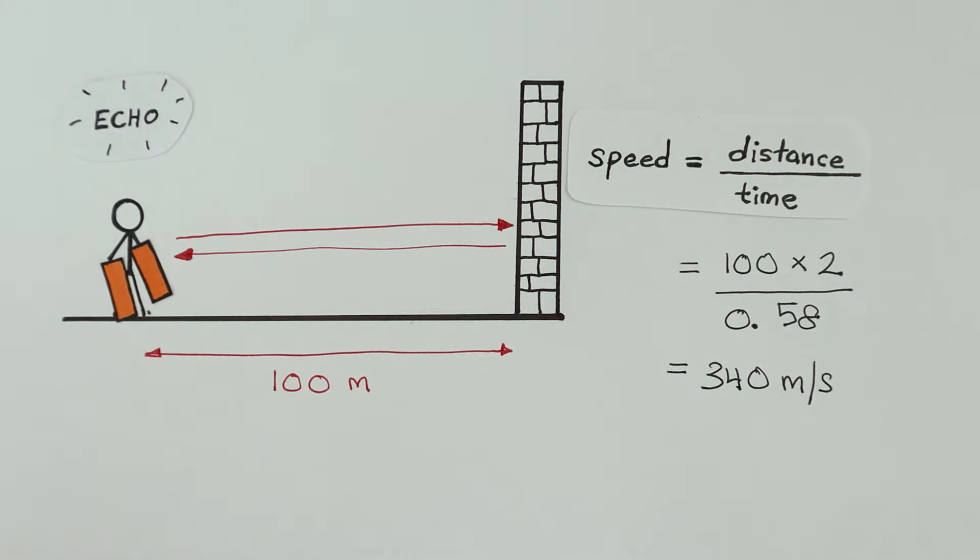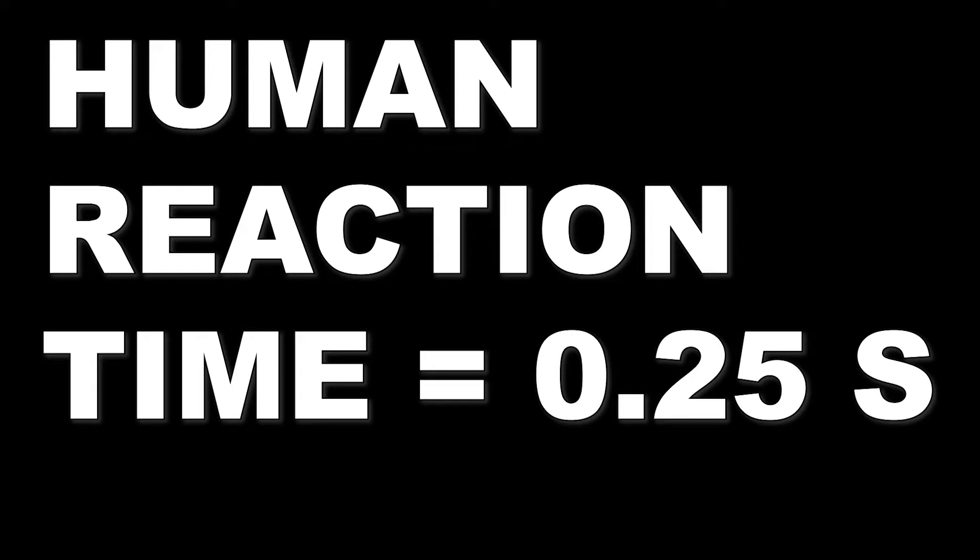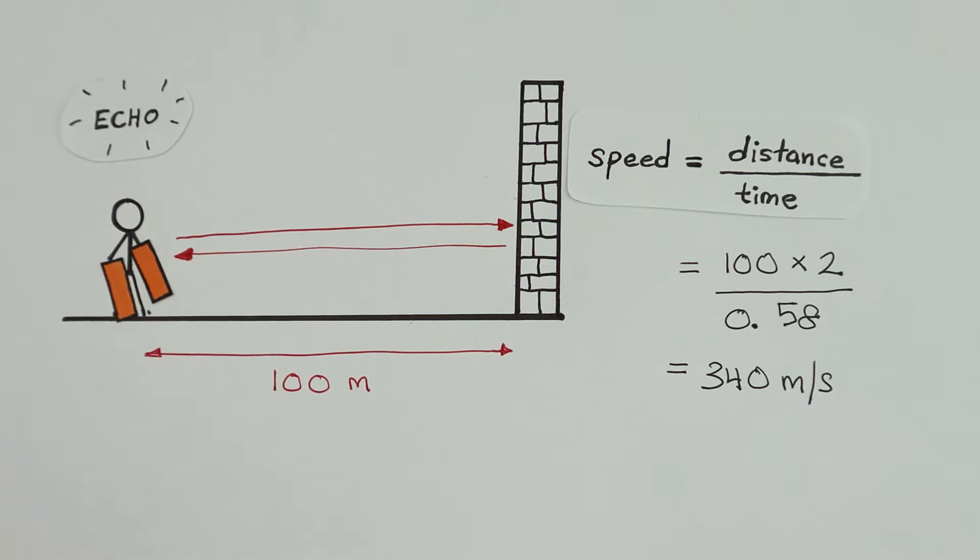But the big problem is, human reaction time is 0.25 seconds on average. So how likely are we able to measure 0.58 seconds without any human error?